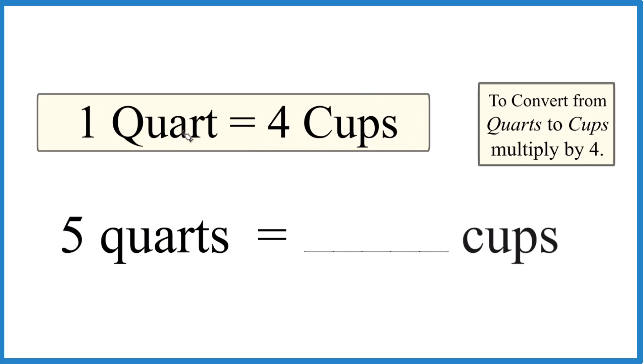So if one quart is four cups, five quarts is just five times four. You get 20 cups and that's the answer.